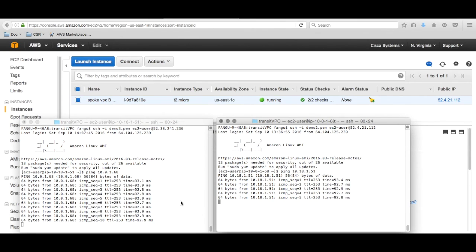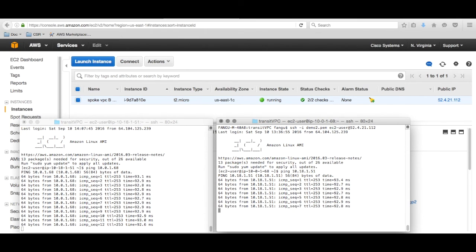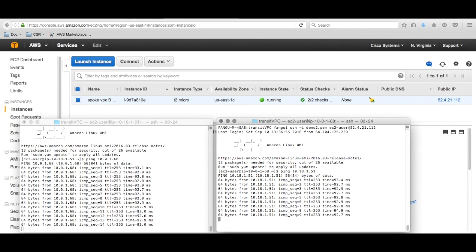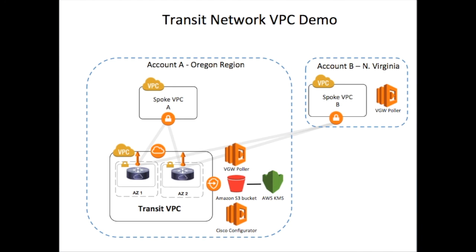After we log into them, we ping each other through their private internal IP addresses, and it is successful. This concludes the demo. To sum up, we created a Transit VPC and connected two spoke VPCs from the same and different accounts. We verified the tunnels through the CSR CLI and AWS GUI, and we also verified the solution by pinging between the two VMs behind the spoke VPCs. Thank you for watching this video and hope this is helpful.